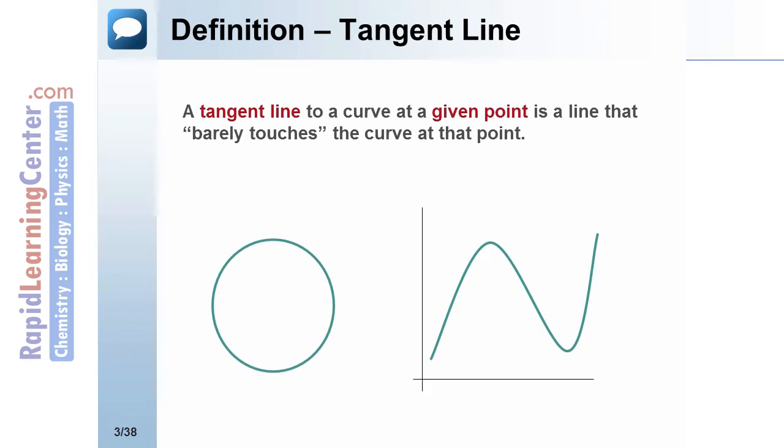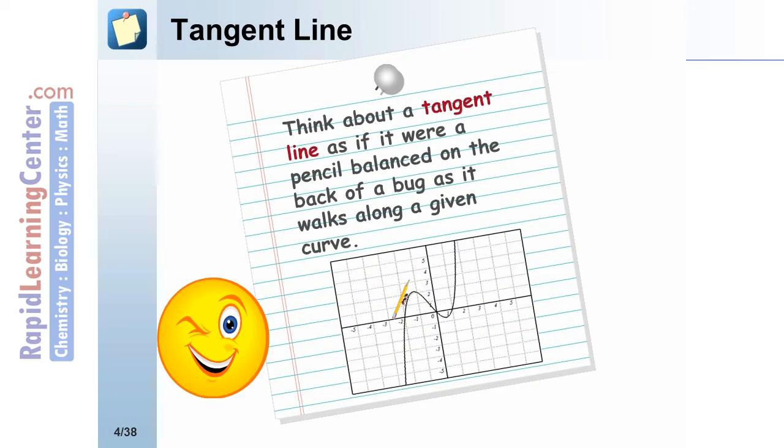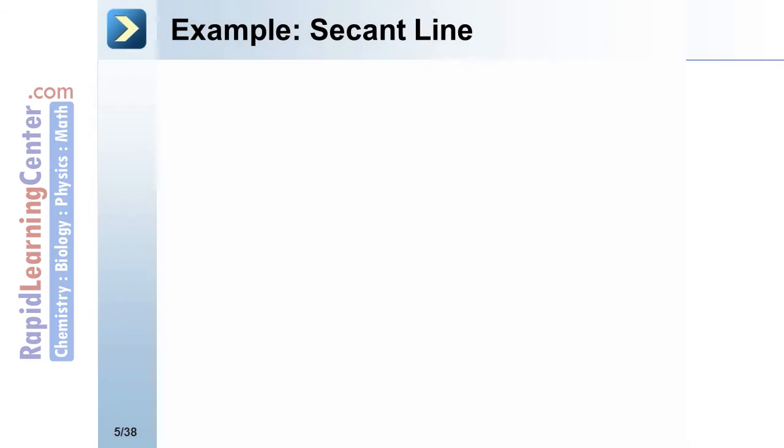Notice our curves down here each have points on them. If we draw in the line through those points, they barely touch the curve at that point and they are each considered to be a tangent line. Think about a tangent line as if it were a pencil balanced on the back of a bug as it walks along a given curve.